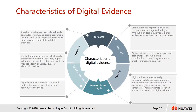Let's look at the typical characteristics of digital evidence. First is fabricated — attackers use hacker methods to invade computer systems and steal passwords in order to arbitrarily tamper with electronic data, making it difficult to validate the evidence. They modify evidence to make it hard to trace back to the original information. Second is shapeless — unlike traditional evidence, which can be directly seen, heard, or touched, digital evidence exists in optical, electronic, or magnetic form in a hard drive or tape drive. It cannot be seen.